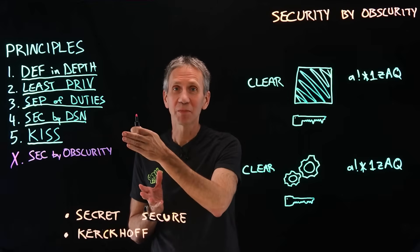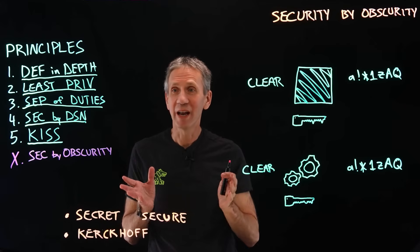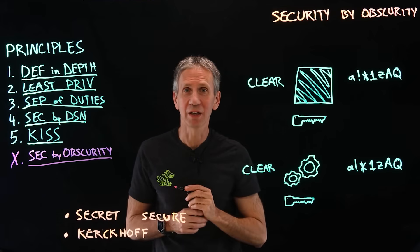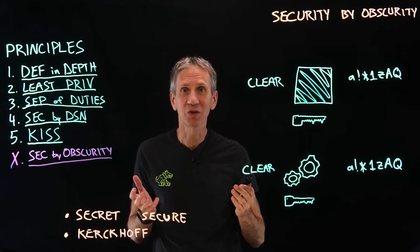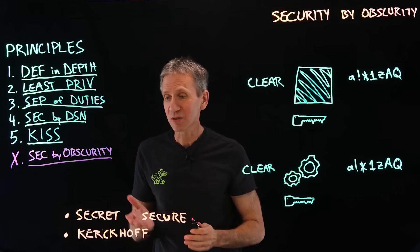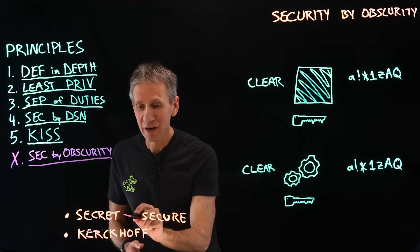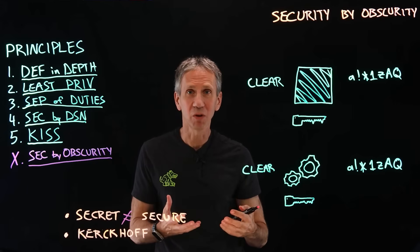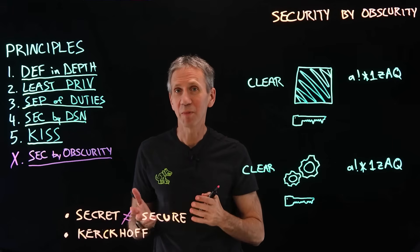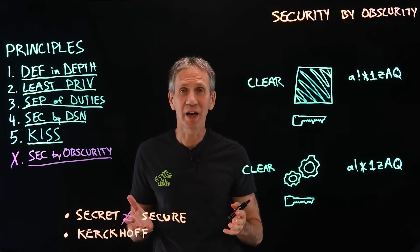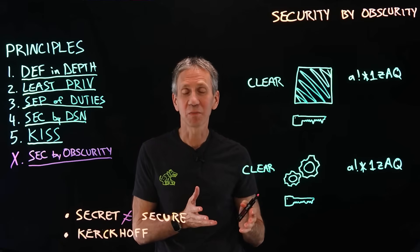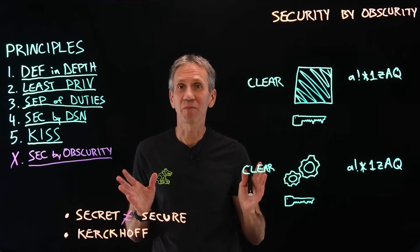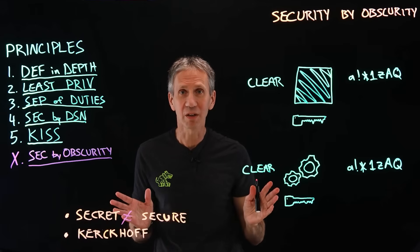Now the big reveal — the security principle you should never observe: security by obscurity. That is, relying on some sort of secret knowledge to make the system safe. It turns out secrecy and security are not the same thing. We want a system that is open and observable. Kirchhoff's principle basically describes this: a crypto system should be secure even if you know every single thing about it except for the key — the key is the only secret in the whole system.